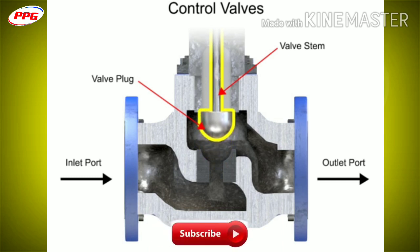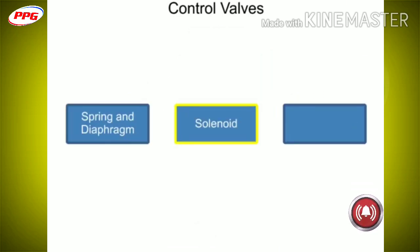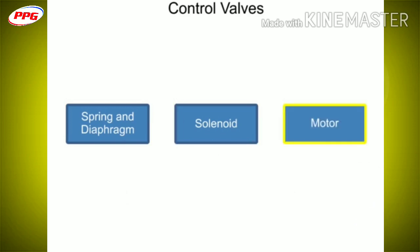Three actuator types are used in control valves, and they include spring and diaphragm, solenoid, and motor.